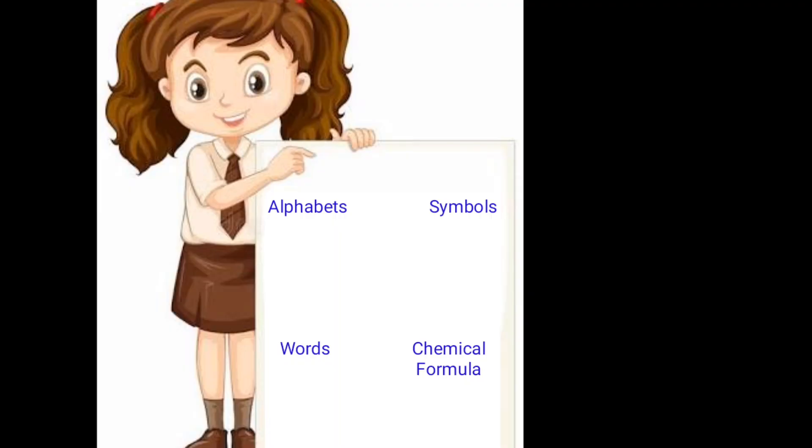Different alphabets of different languages help us to form words. Same here in chemistry, symbols combine to form formulas when they are combined in a particular ratio.